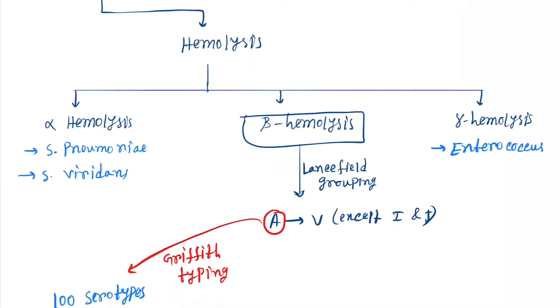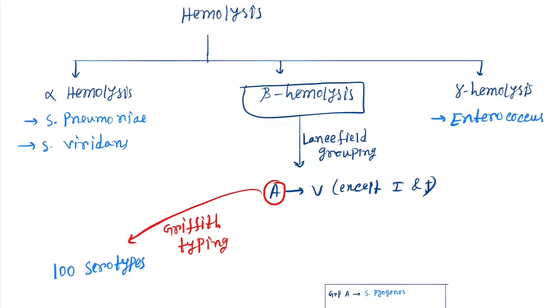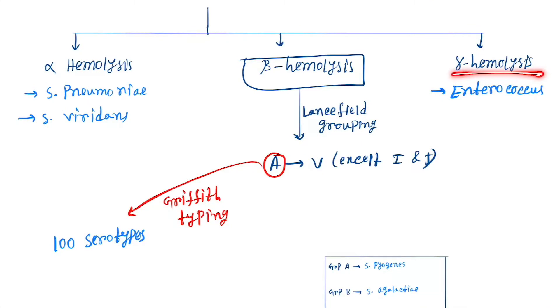These are further classified by hemolysis: alpha hemolysis, beta hemolysis, and gamma hemolysis. Alpha hemolysis includes Streptococcus pneumoniae and Streptococcus viridans. Gamma hemolysis is Enterococcus.